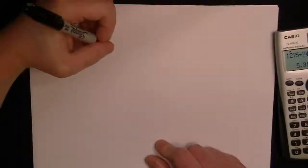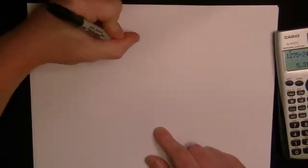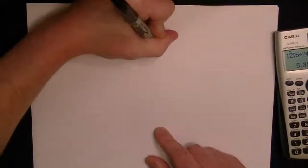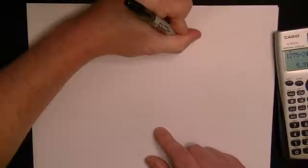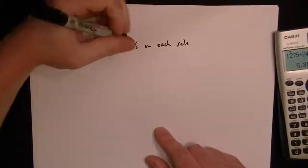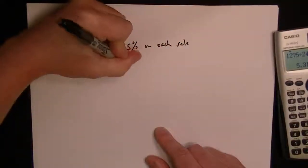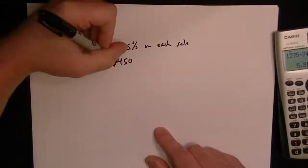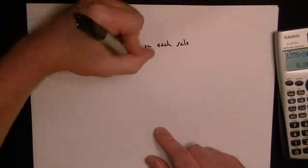Okay, we're told that Steve is a salesman and he earns 8.5% on each sale. He also has a base salary of $450, so that means he's going to get $450 whether he gets paid or not. He gets it per week.